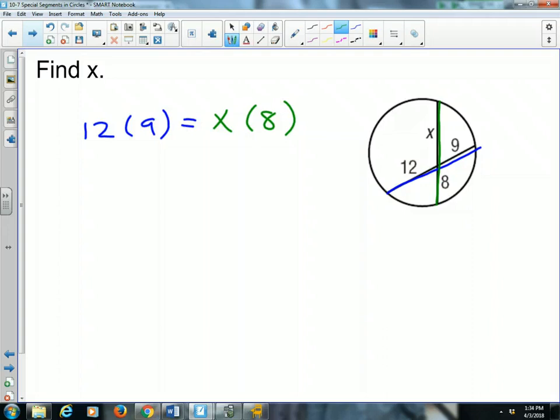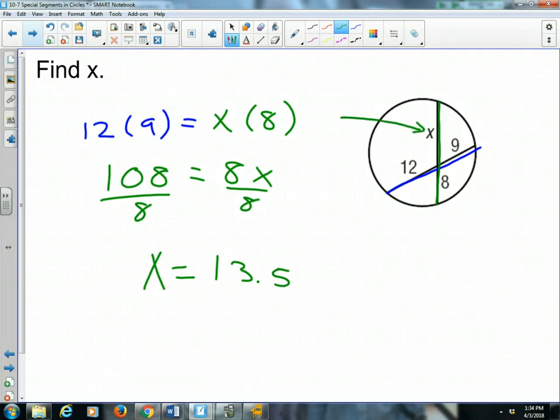So, pretty simple, pretty basic. We're now just going to solve by doing 12 times 9 to get us 108. That equals 8x. Simply by dividing by 8 now, we get x all by itself. 108 divided by 8, x equals 13.5 units. This length, this length right here, is 13 and a half.